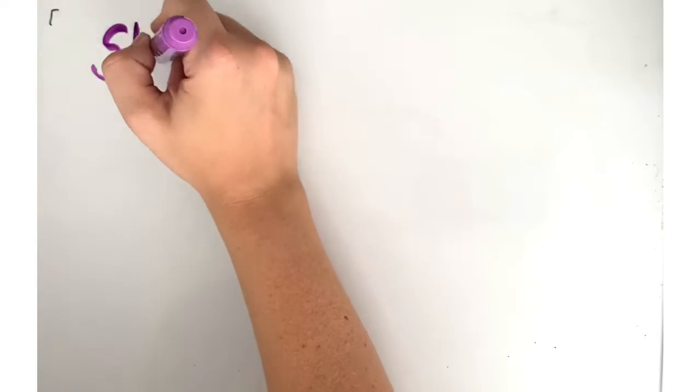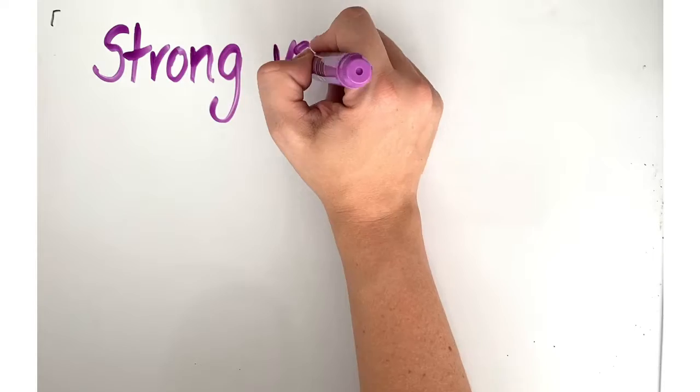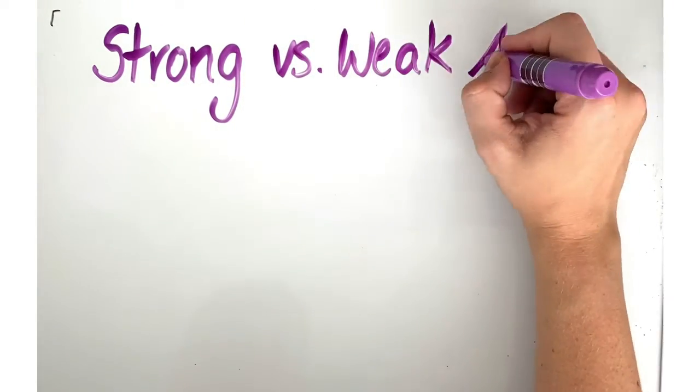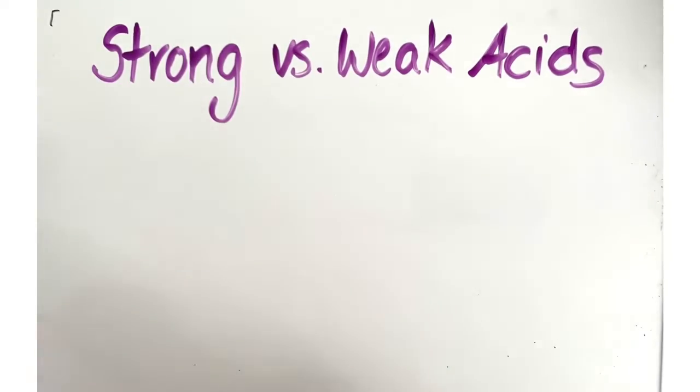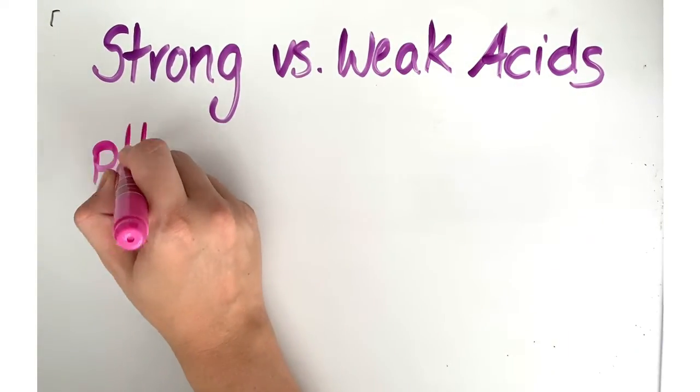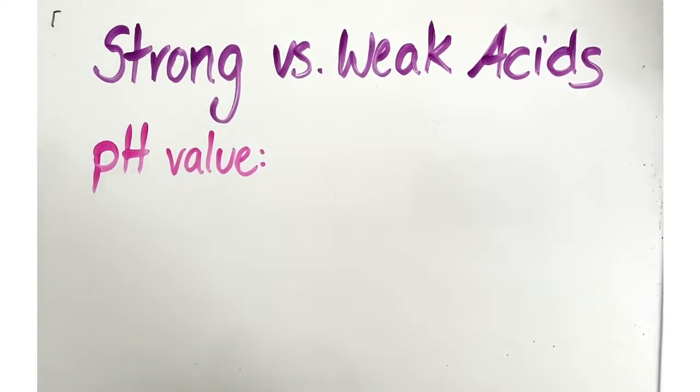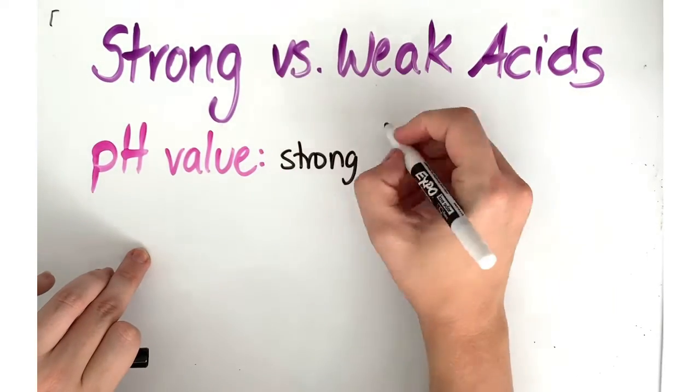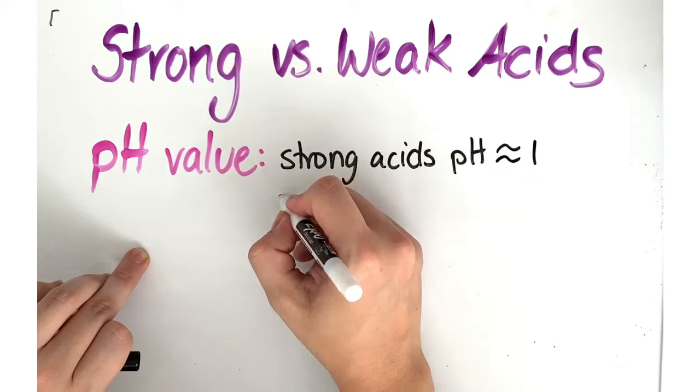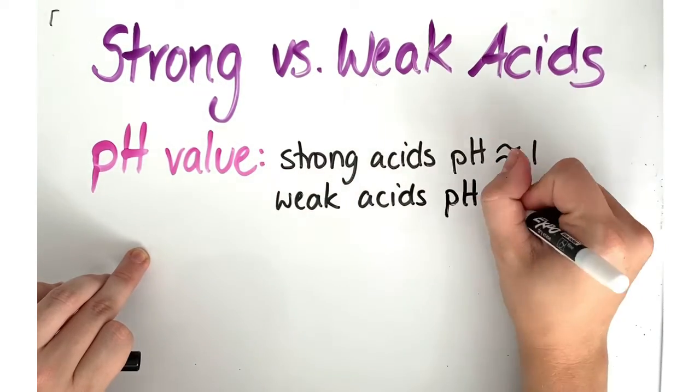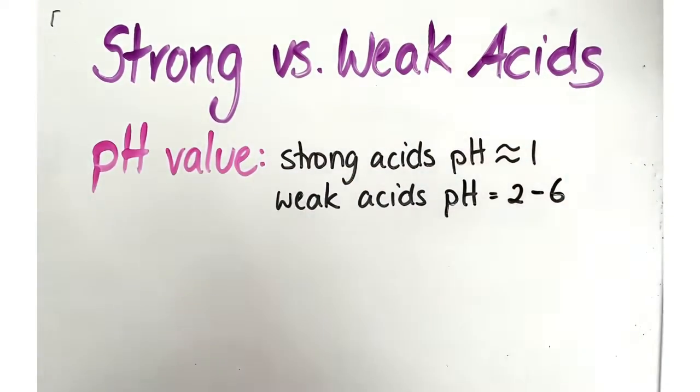So how do we identify strong versus weak acids? If we have an unknown substance and want to know is it a strong acid or a weak acid, here are some ways we can identify them. The first is the pH value. A strong acid will have a pH close to 1, while a weak acid will have a pH between 2 to 6, remembering that around 7 is our neutralization point.